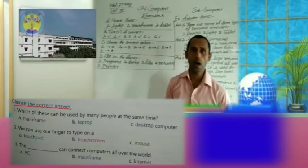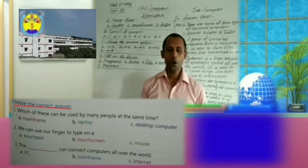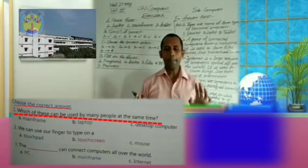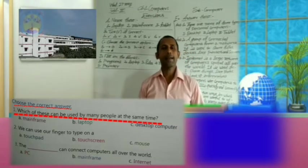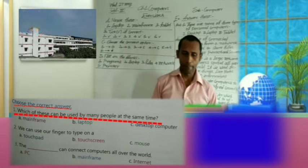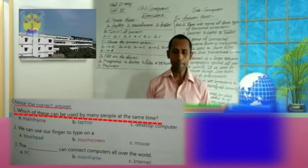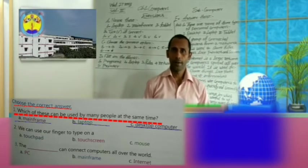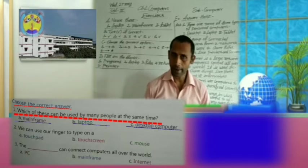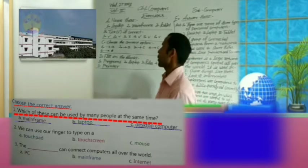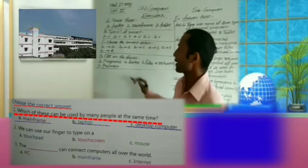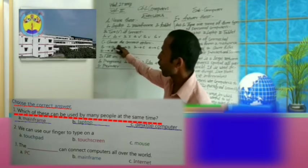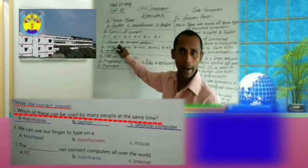Now, choose the correct answer. First: which of these can be used by many people at the same time? Options are mainframe, laptop, and desktop computer. Think and give the answer. Yes, you are right. It is a mainframe computer. So, write option A.